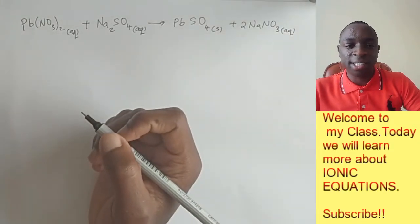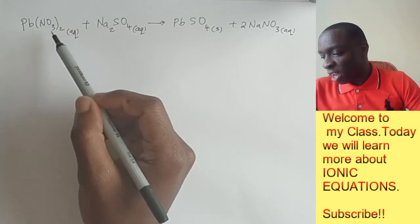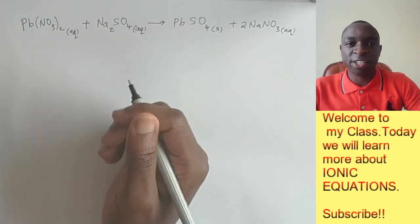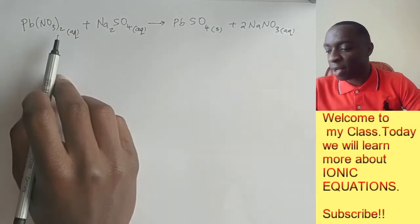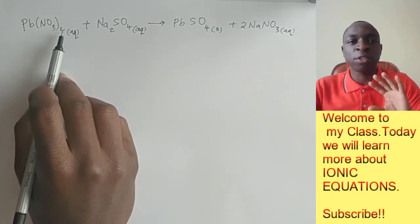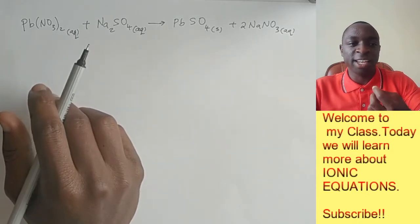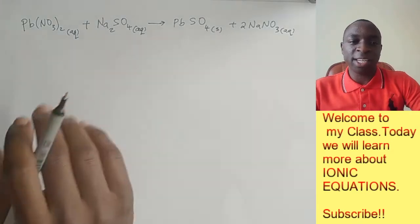For instance, lead nitrate has lead ions and nitrate ions. And this number two here suggests that we have two nitrate ions for every lead ion. So let us see how it is.